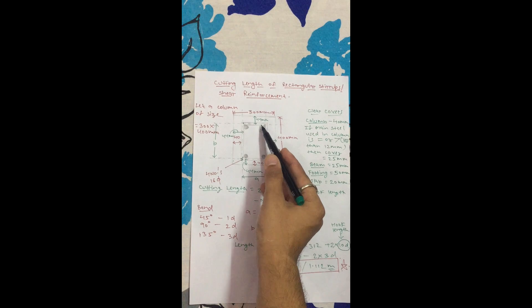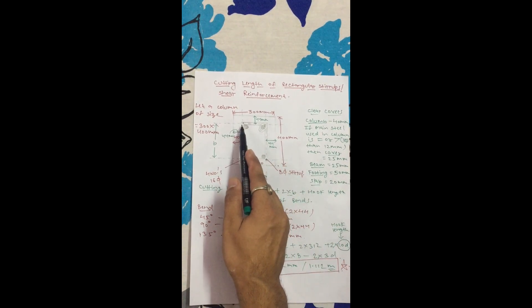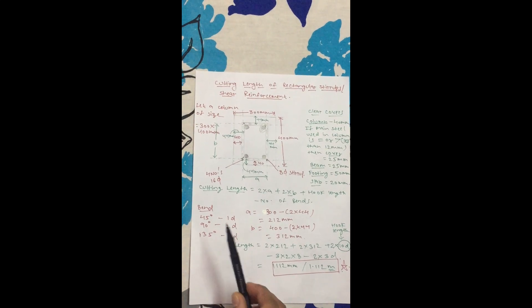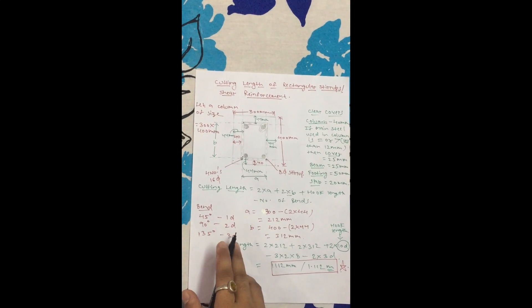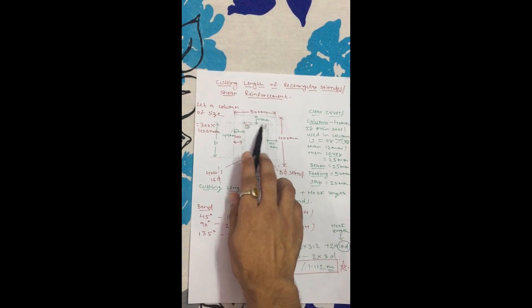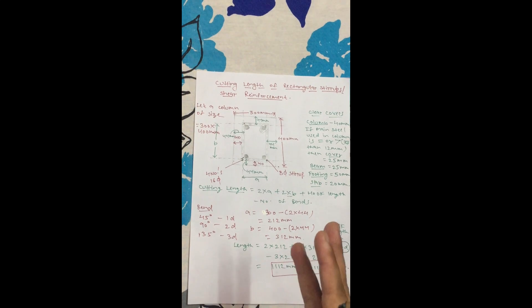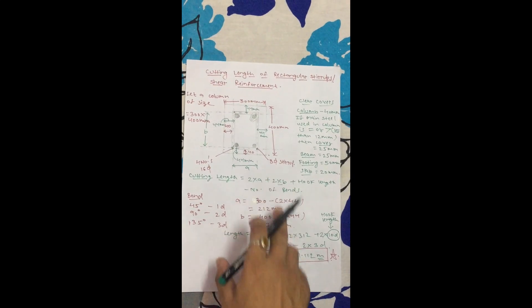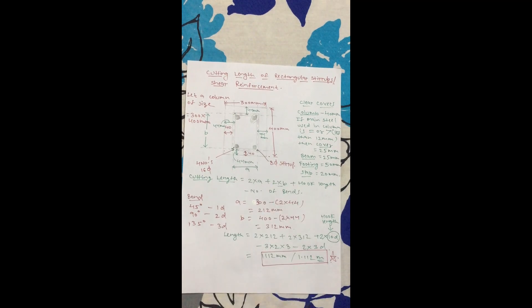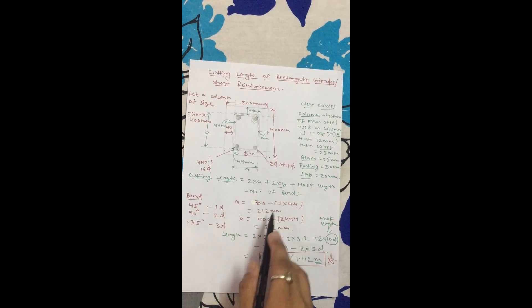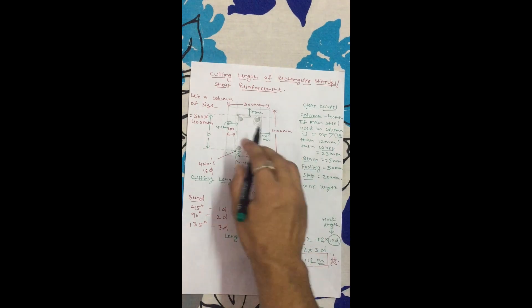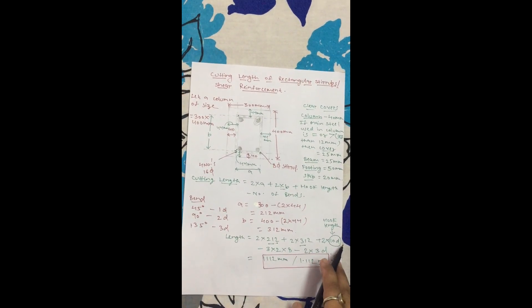Now for the formula: 2 into length plus 2 into width, minus the number of bends. There are five total bends at the corners - one, two, three, four, five. For a 45 degree bend it's 1D, for a 90 degree bend it's 2D, and for a 135 degree bend it's 3D. We have three 90 degree bends, so the accurate cutting length is 2 into (300 minus 2 into 44) plus 2 into (400 minus 2 into 44).